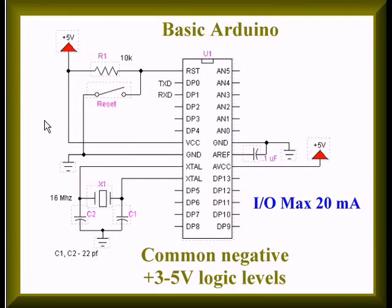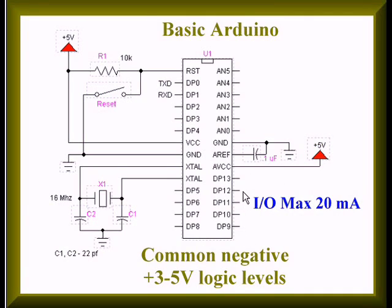Looking at the properties of a common microcontroller like Arduino: we have a negative common and a positive 5-volt VCC. The I/O pins on the Arduino only put out a maximum of 20 milliamps. Also note that if you connect anything with a voltage greater than 5 volts directly to an I/O pin, you will damage the Arduino. So everything with the Arduino revolves around 5 volts and a negative common.